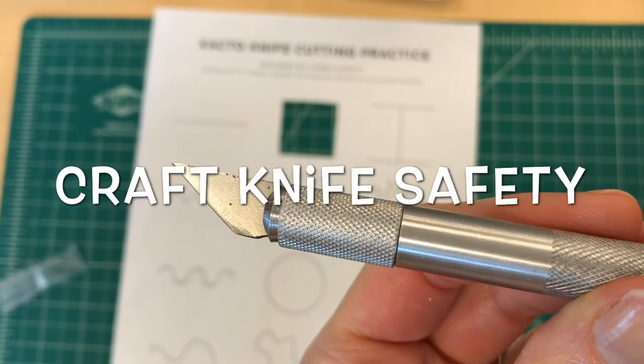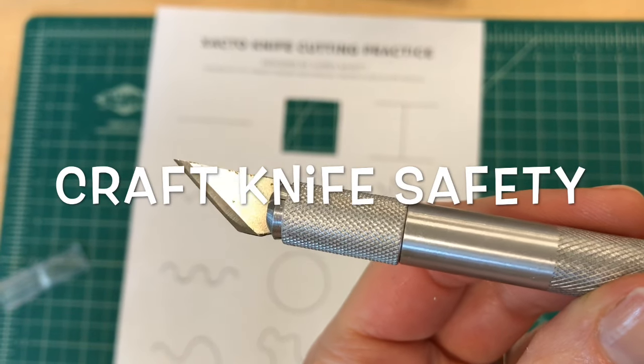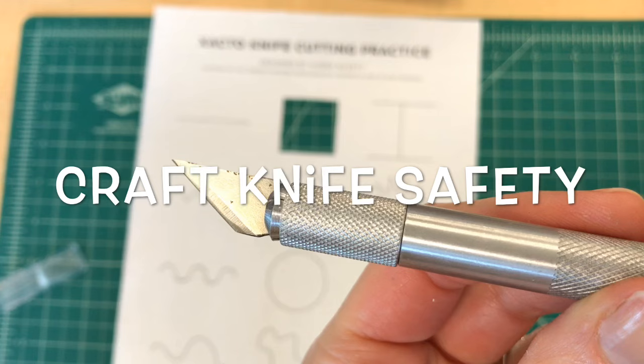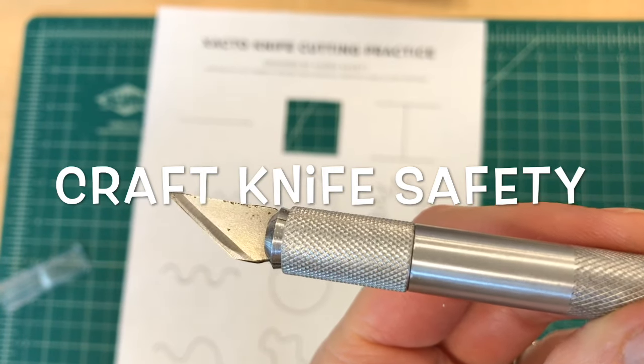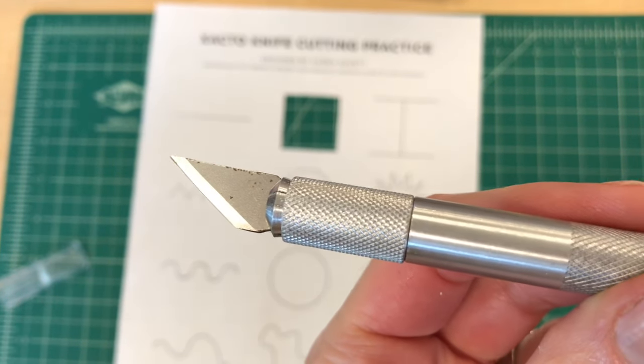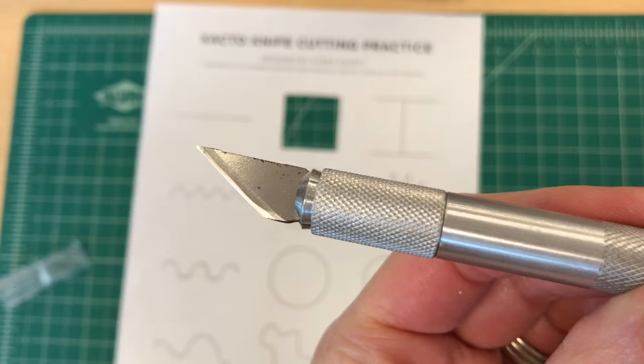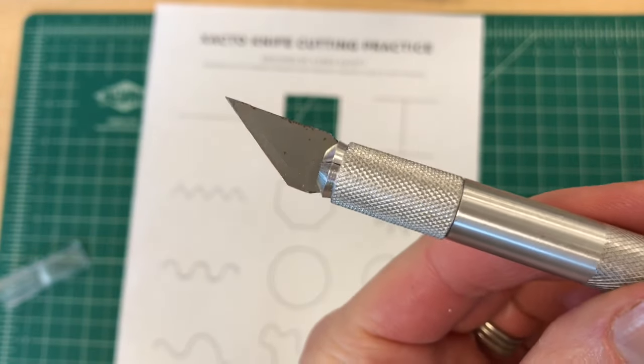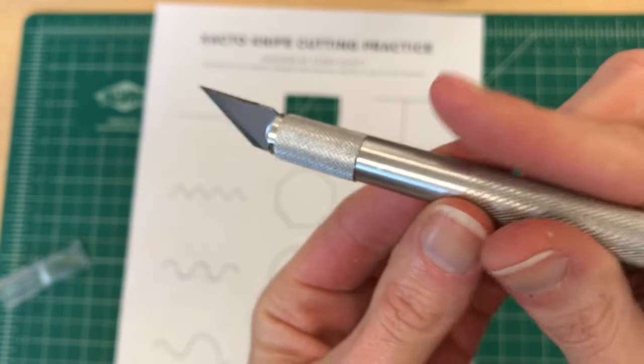In this video we're going to go over some basic tips and safety instructions for using a craft knife. First understand that the sharp part of the knife is that diagonal bright white looking shiny edge that you see at the tip.